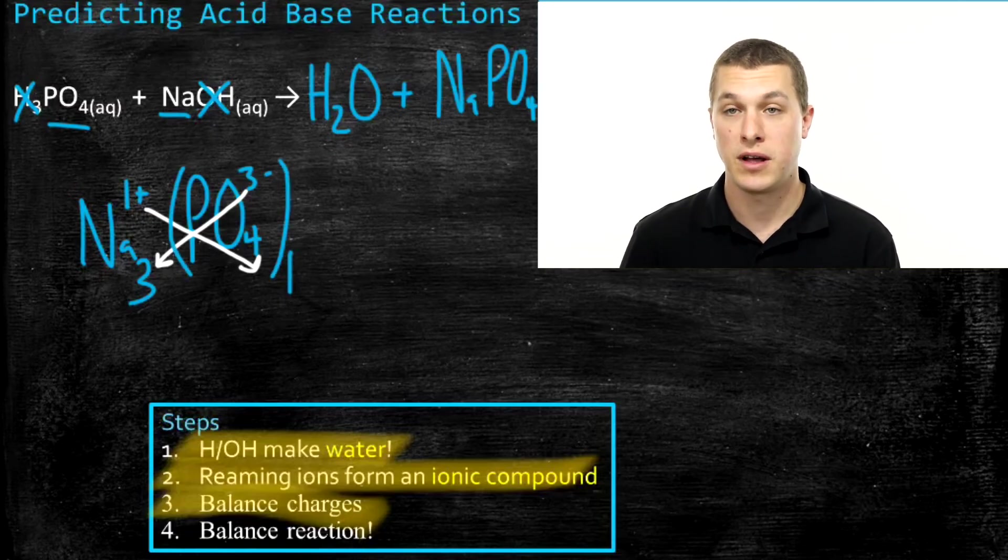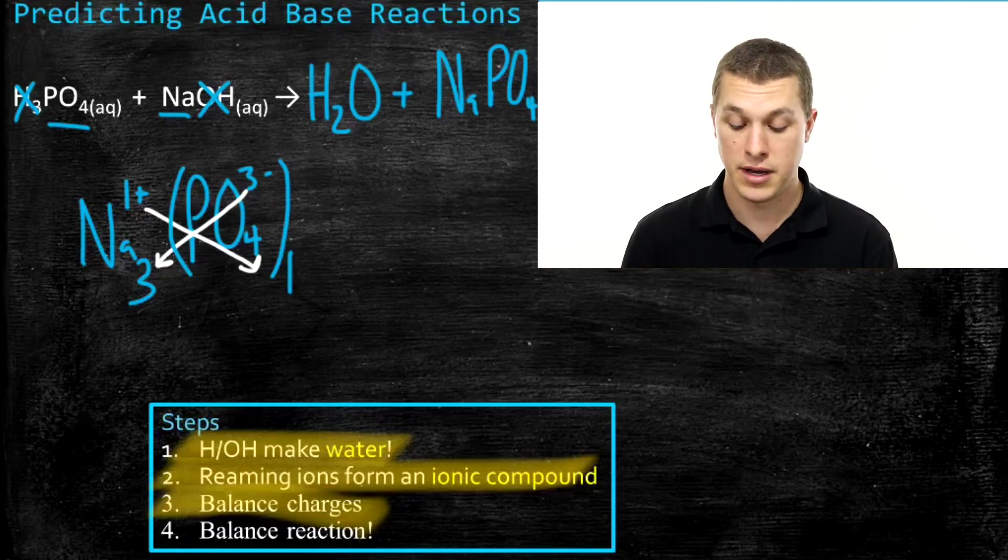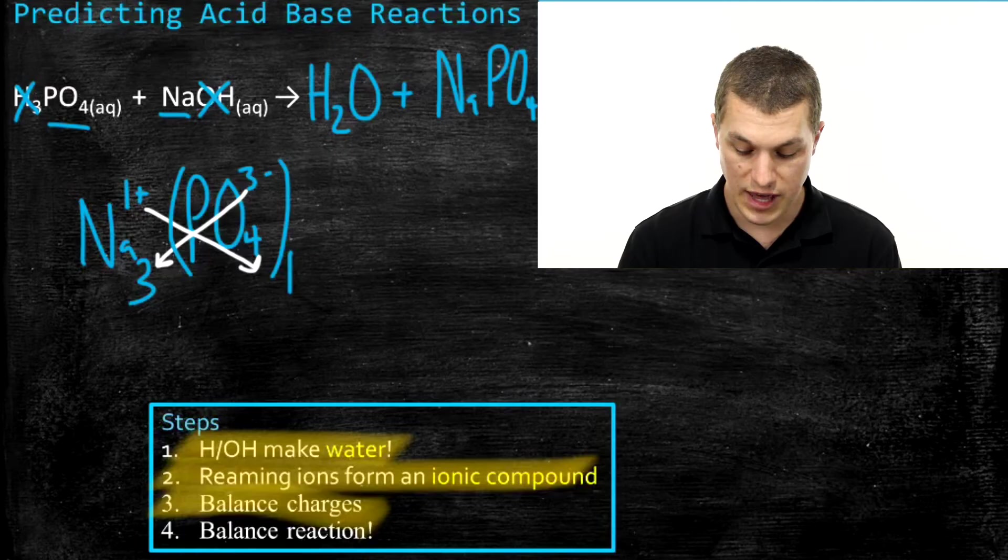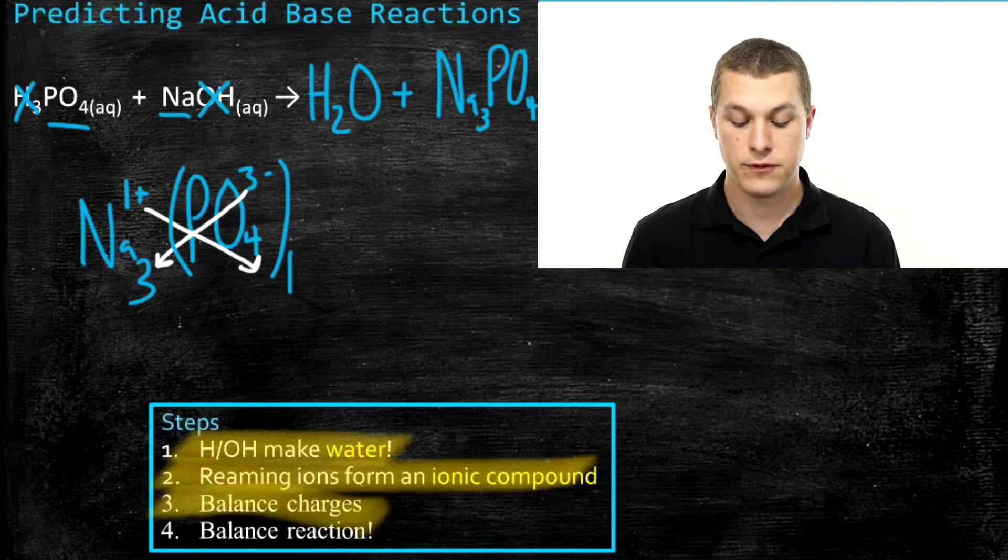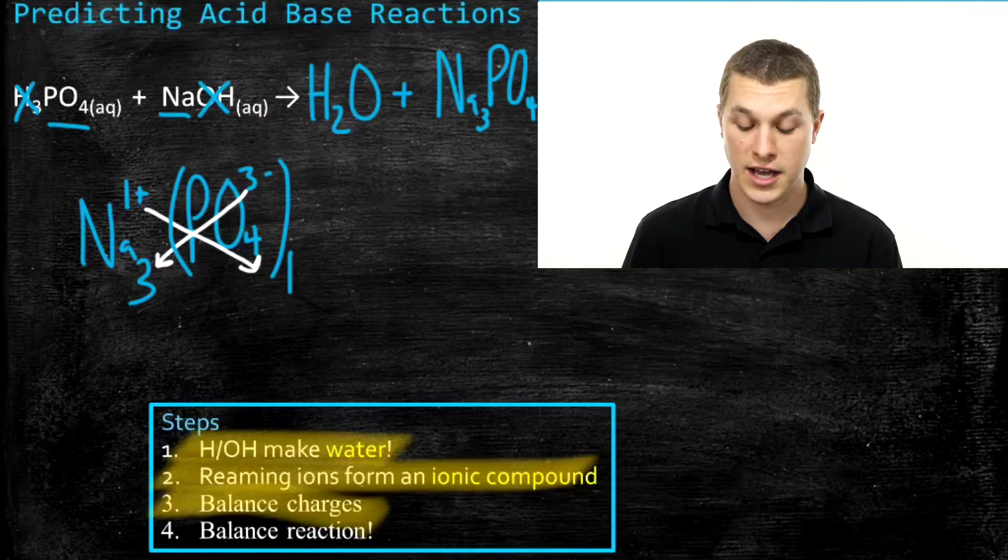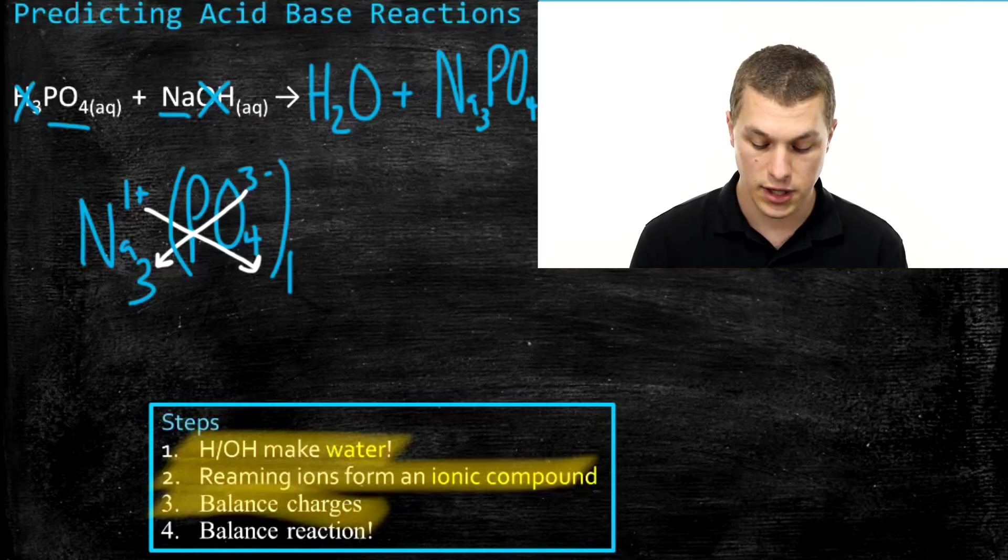If you're not sure how to write those balanced charges, check out my Naming Ionic Compounds video, and I go through in more detail how you balance those charges. That means we should have three sodiums with our phosphate. So now we're done except for balancing the chemical reaction. Like I said, I'll leave balancing the chemical reaction to you. If you need help doing that, go ahead and watch my balancing chemical reactions video.